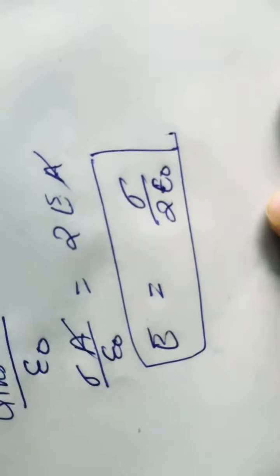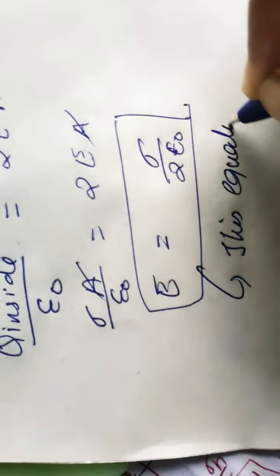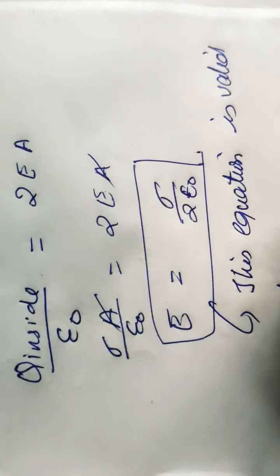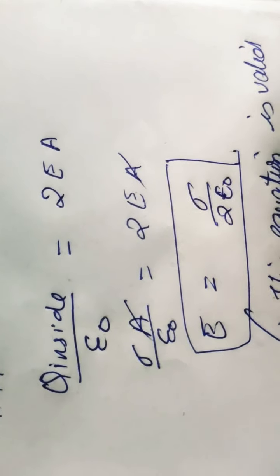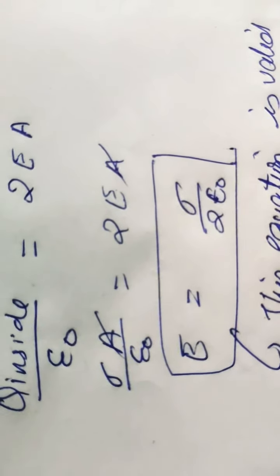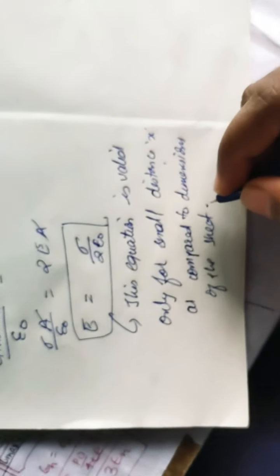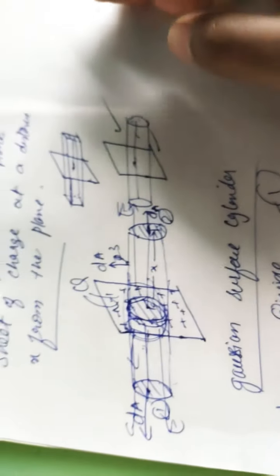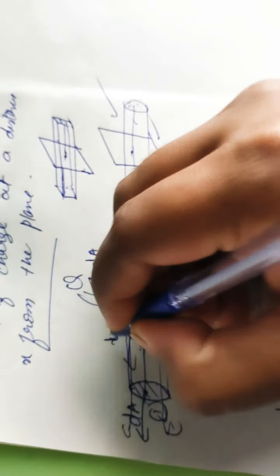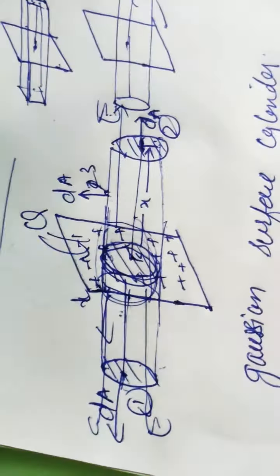The final equation we get is E = sigma / epsilon₀. But always remember that this equation is valid only for small distance x as compared to the dimensions of the sheet. If x is very large compared to the dimension L of the sheet, this equation will not be valid. This equation is valid only when the charge is on the surface and x is smaller than the dimension of the sheet.